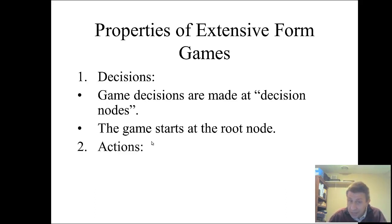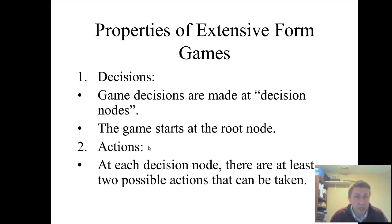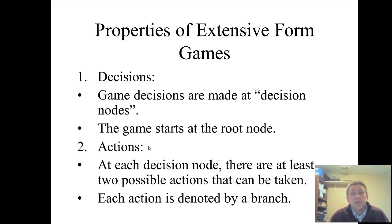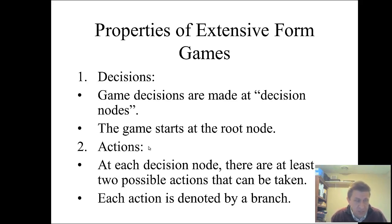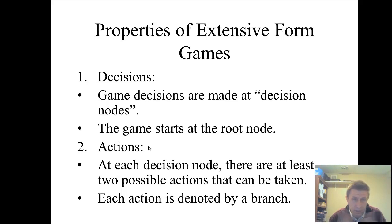The actions a player could take at a decision node are indicated by branches. At each decision node you have to make a decision, so there have to be at least two possible actions — if there were only one, you don't really have a decision. These are called branches of the game tree. Each action is denoted by a branch, and you label the action right on the branch. For example, right or left, sue or not sue, share or not share — whatever it is, it gets written right there.